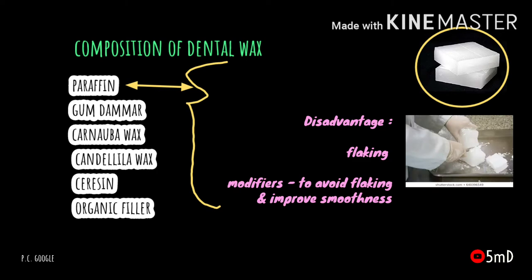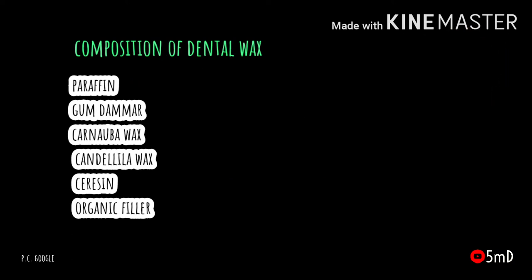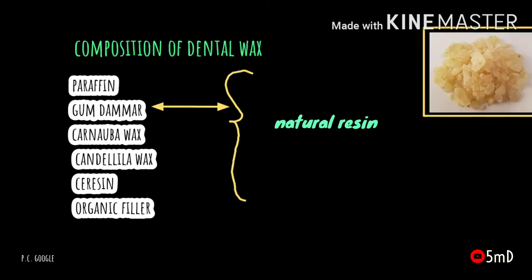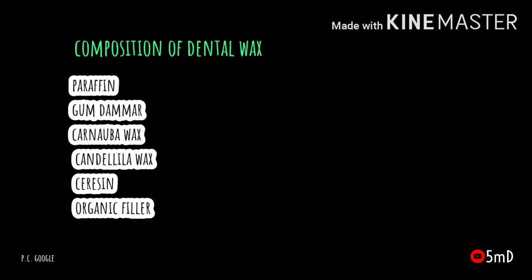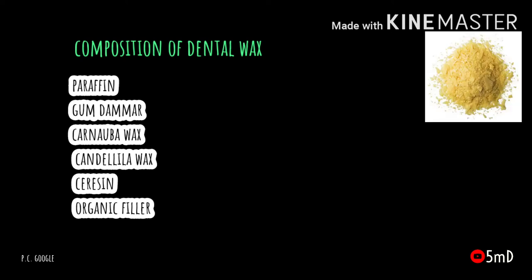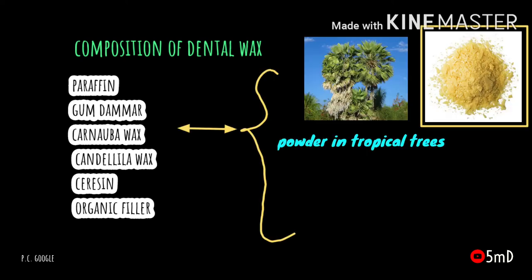Paraffin alone when used can cause flakes when trimmed, so for smoothness and a glossy surface, certain modifiers are added. Also, to remove the flaking property of paraffin, gum damar or damar resin is added. It is a natural resin which increases smoothness and is more resistant to cracking and flaking of the wax. It also increases the toughness of the wax and enhances its smoothness and luster.